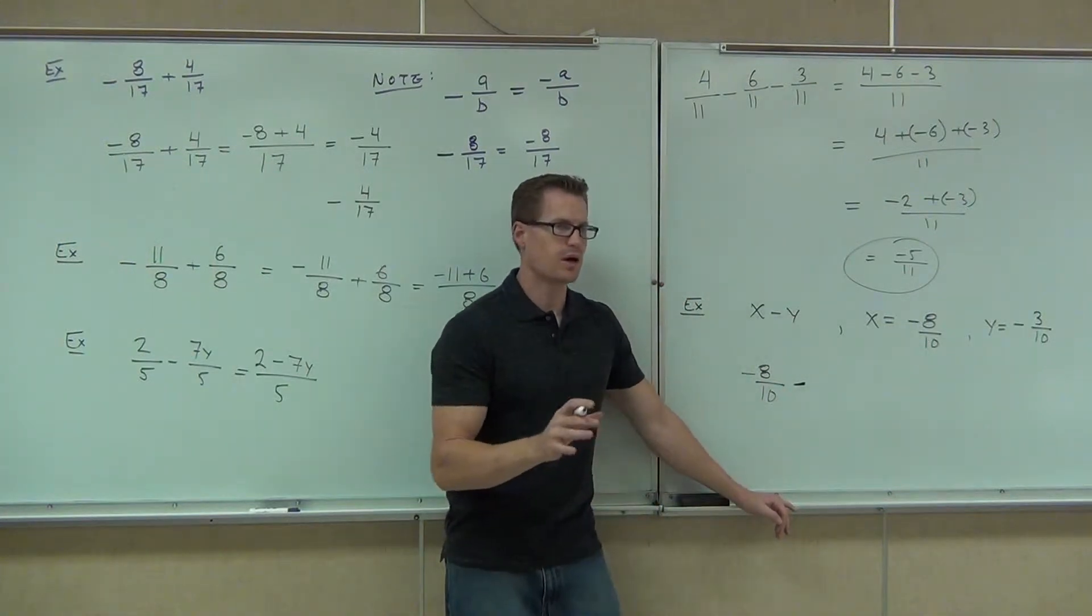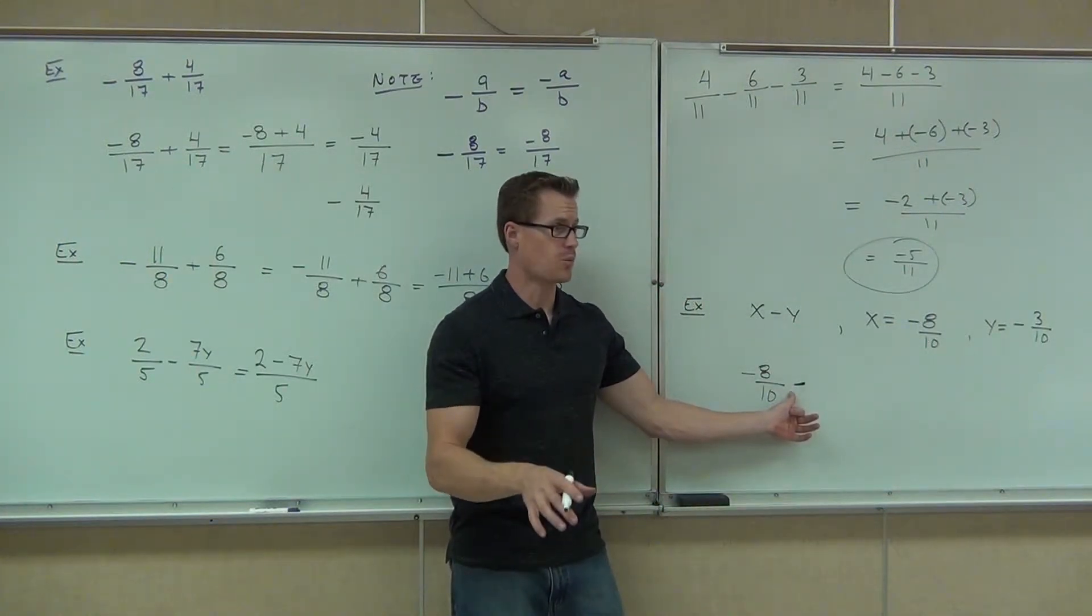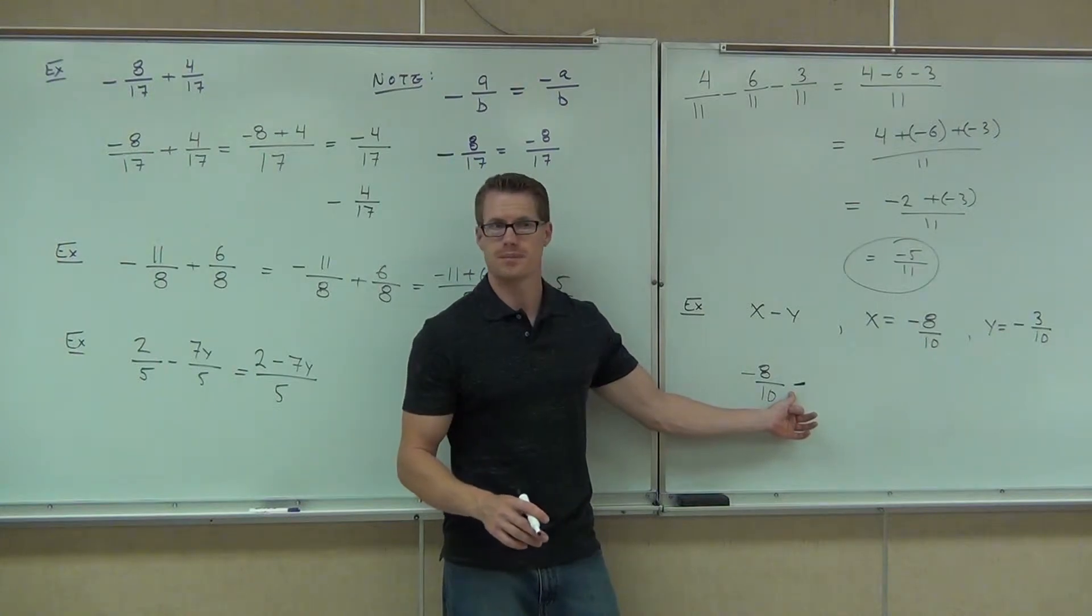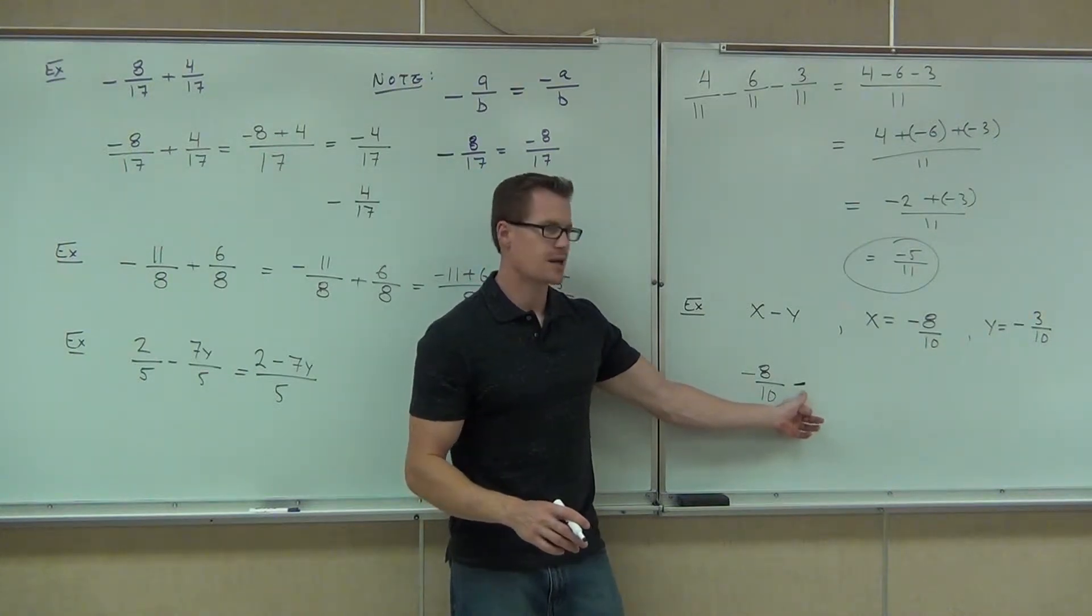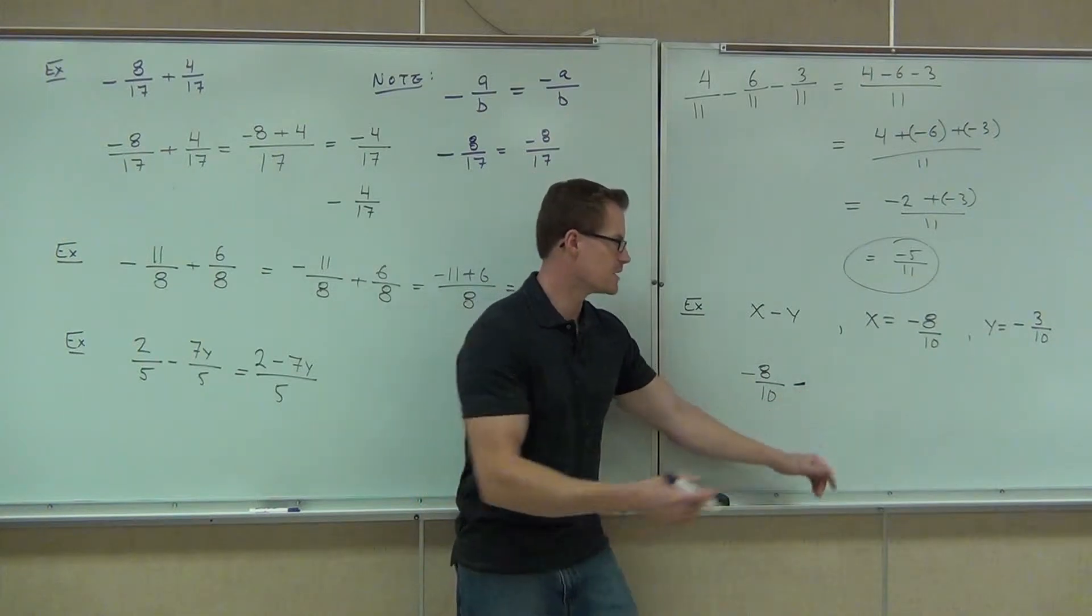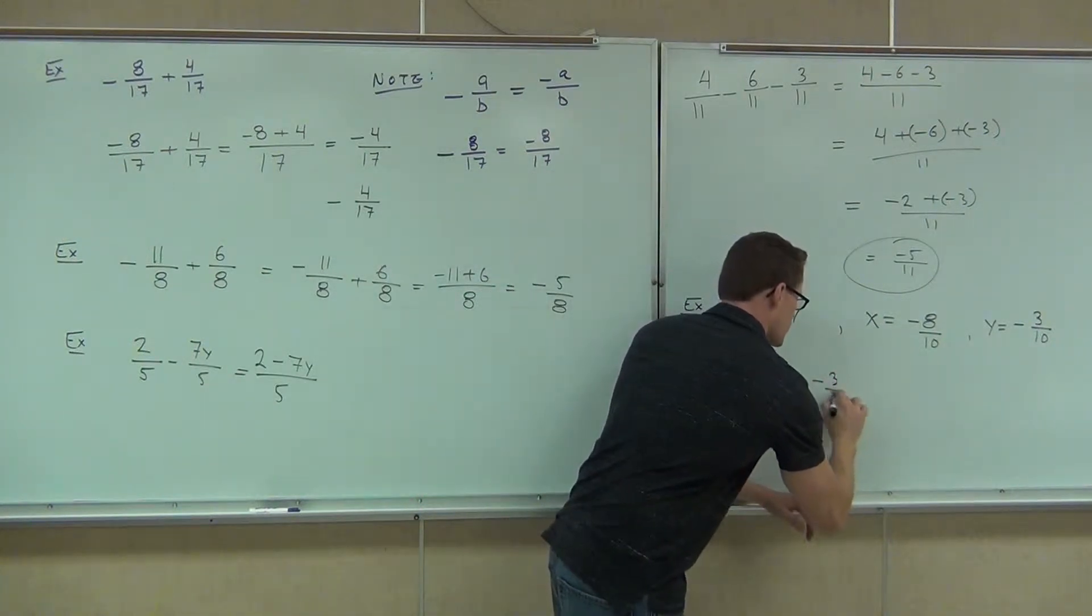Are you following me on that? No matter what, that's going to be the way it is. Next, we look at the value of y. How much is y? Negative 3 tenths. So this doesn't count for that negative. This counts for the minus. Now for the y, I need to write negative 3 tenths.